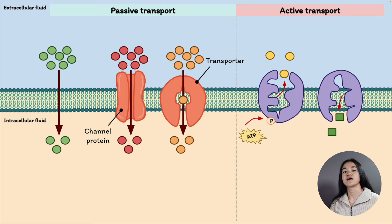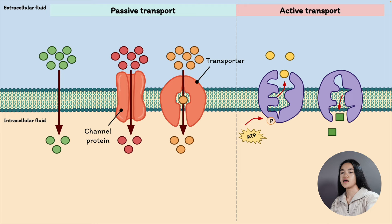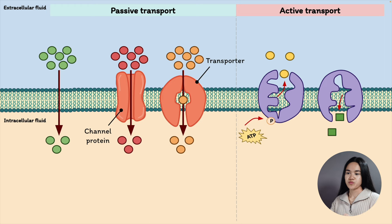The second type of transport is active transport, which uses energy in the form of ATP. In active transport, energy is used to move a substance uphill across the membrane — from an area of low concentration to an area of high concentration — which is against the concentration gradient. Similar to facilitated diffusion, a substance needs to bind to the transporter in the membrane. Because we're moving substances uphill, these transporters are known as pumps. These transporters are also very specific to the molecules they transport and they can become saturated, similar to facilitated diffusion.